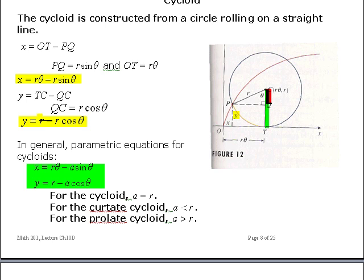So for a cycloid, the pencil is located right on the rim of the circle, so a is equal to r. For the curtate cycloid, a was less than r because the pencil was located somewhere back here. And for the prolate cycloid, a was greater than r because the pencil is located extended out here.